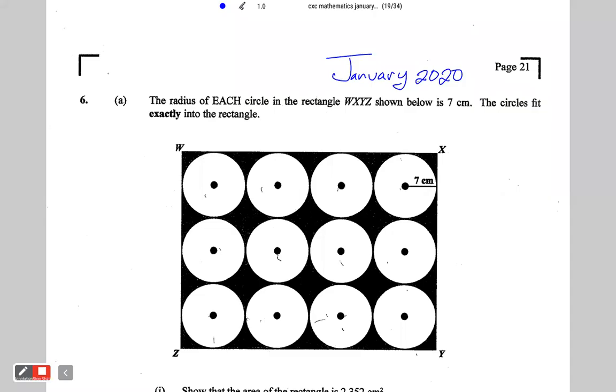Alright, so this is January 2020, question number six. It says the radius of each circle in the rectangle WXYZ shown below is seven centimeters.